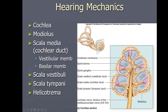Scala vestibuli is on the top, scala tympani is on the bottom, and scala media is always in the middle — regardless of how you're looking at the section. There are also two membranes: the vestibular membrane separates the scala media from the scala vestibuli, and the basilar membrane is on the bottom separating the scala media from the scala tympani.